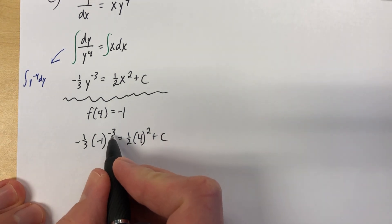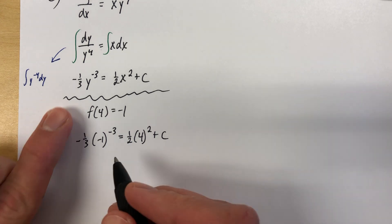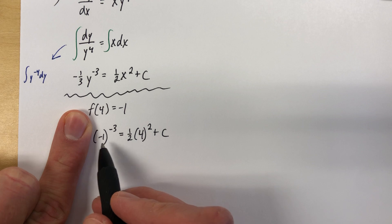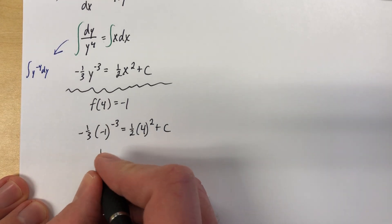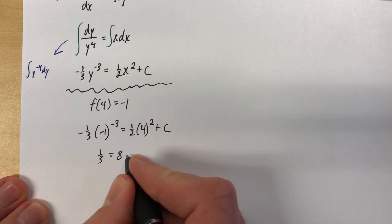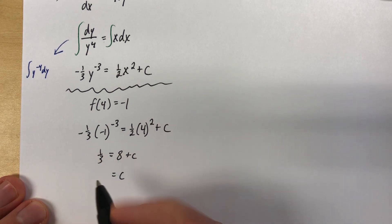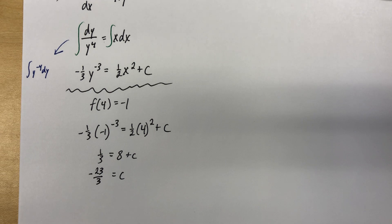So -1/3 of (-1) to the negative 3 equals 1/2 times 4 squared plus c. We're going to solve it for c. And it's not going to be that bad. Let's see. -1 to the negative 3rd. That'd be, well, -1 to the 3rd, but that'd be in the denominator. -1 to the 3rd is -1, but it's in the denominator. So we have a -1 still. -1/3 times -1 is positive 1/3 equals 16. Half of that would be 8 plus c. And so we'll have c equals, well, -8 plus 1/3. And that is going to give me -23/3.